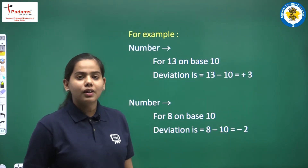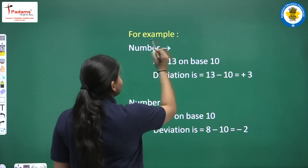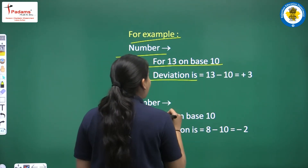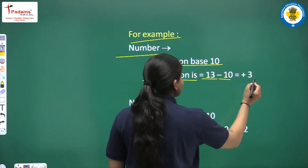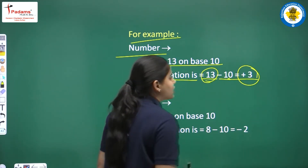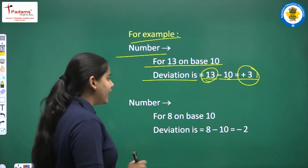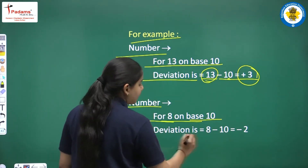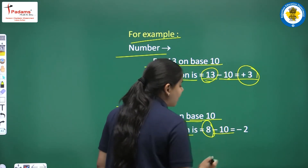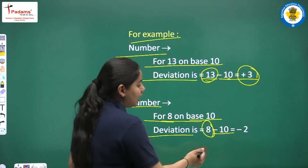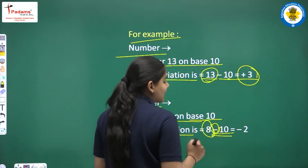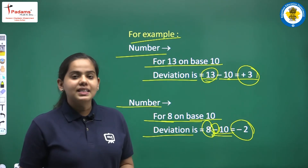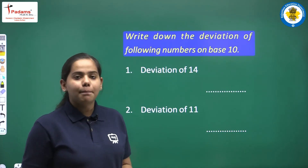Let's apply these points to some questions. For example, the number is 13 and base is 10. Because the number is greater, we get positive deviation: 13 minus 10 equals plus 3. Next example, number is 8 on base 10. Here the number is smaller, so 8 minus 10 gives us minus 2. So minus 2 is negative deviation.